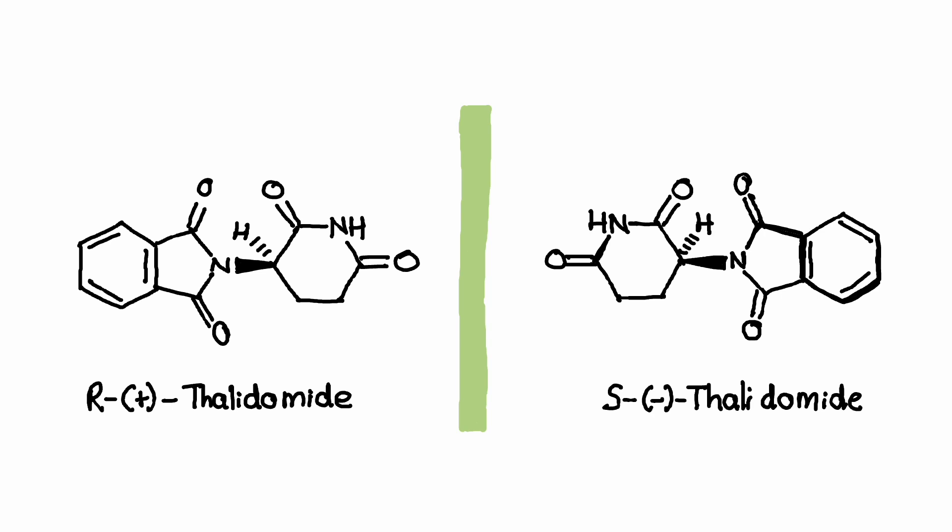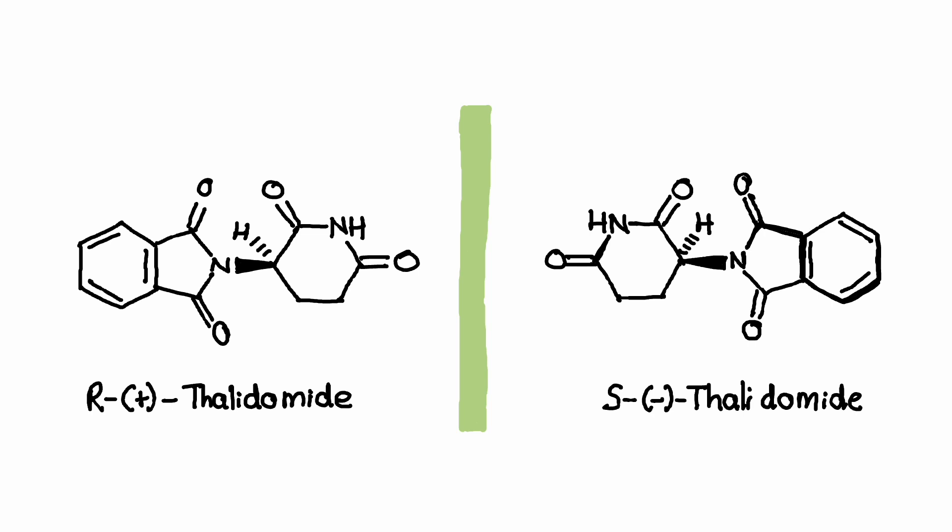This highlights the importance of learning and understanding chiral molecules as well as enantiomers and their chemical and biological properties. And that concludes this video. I hope this video was helpful for you. If it was, please like it and please subscribe. See you in the next video. Bye!